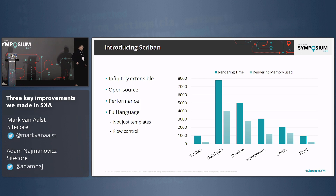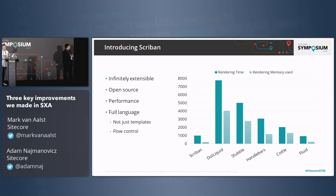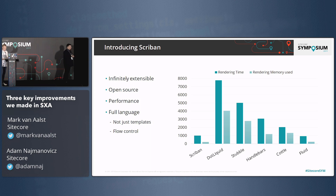The biggest benefit of Scriban is how much control we can exert over the rendering process. As back-enders, we can give as much or as little flexibility as we need. We can expose only properties, which is what we are doing in this first version. It's a full language — much more complete than pure liquid. It absolutely comes out on top on every benchmark. It's based on abstract syntax trees, so it's fast to parse, contrary to Razor which requires compilation. It has flow control, functions, for loops, if statements, all the good stuff, and it is very nicely extensible.